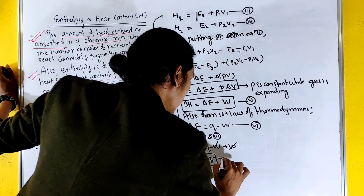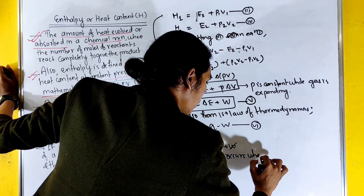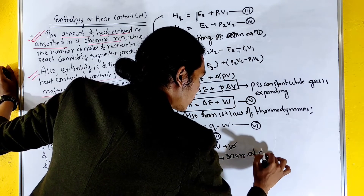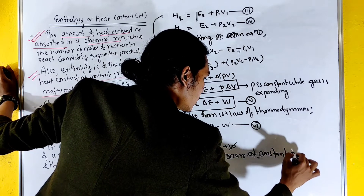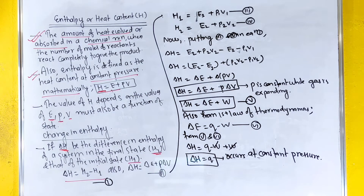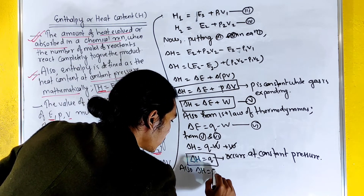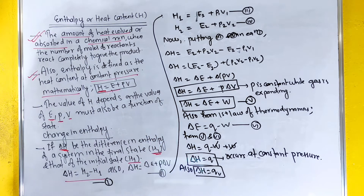When a reaction occurs at constant pressure, delta H equals q at constant pressure, which we can denote as q_p. This means the enthalpy is a direct measure of heat exchanged at constant pressure.